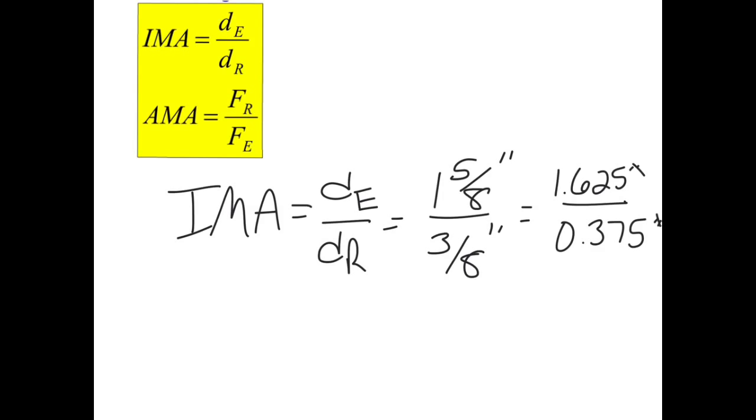My inches are going to cancel out, and that equals 4.33. So my ideal mechanical advantage is 4.33.